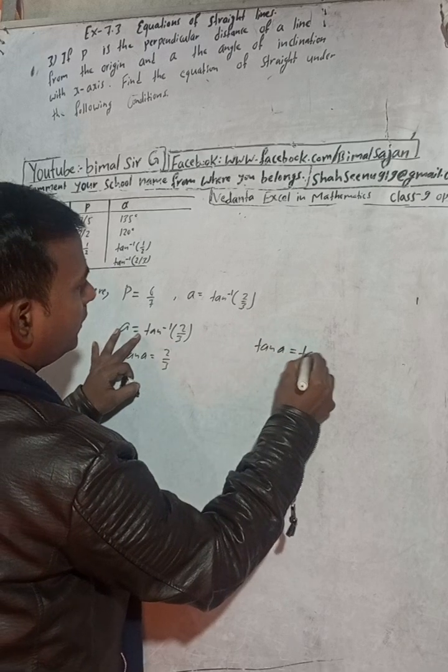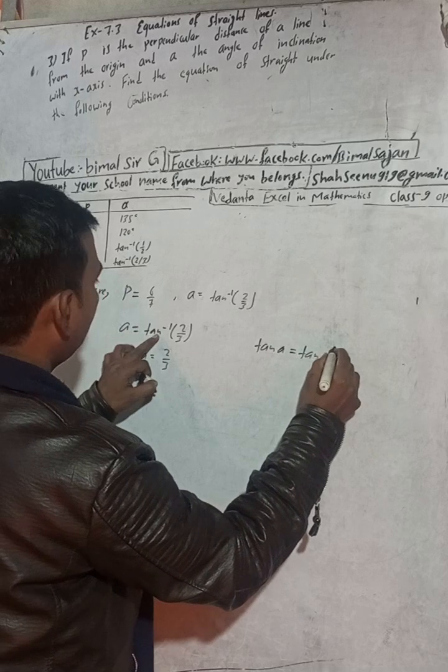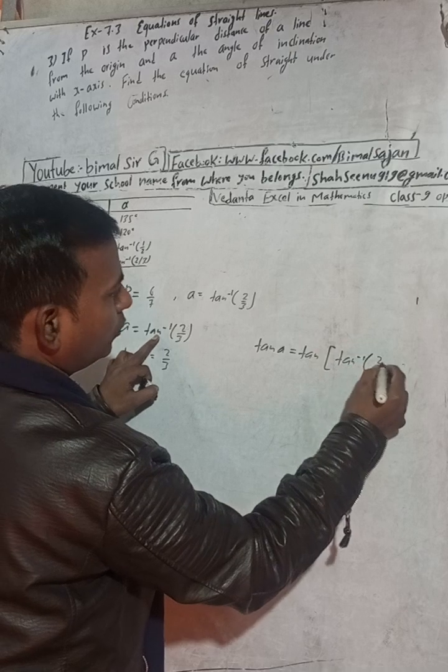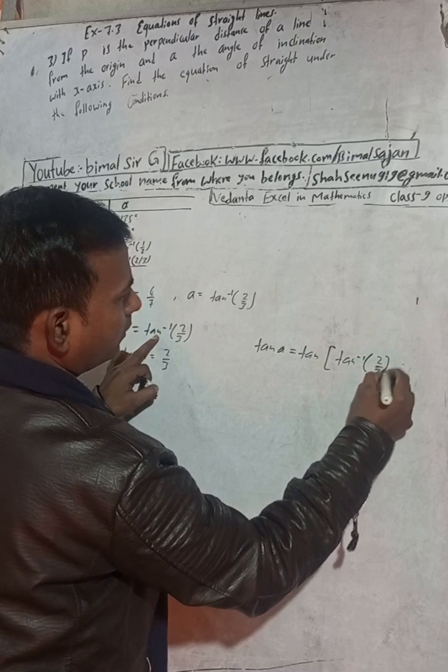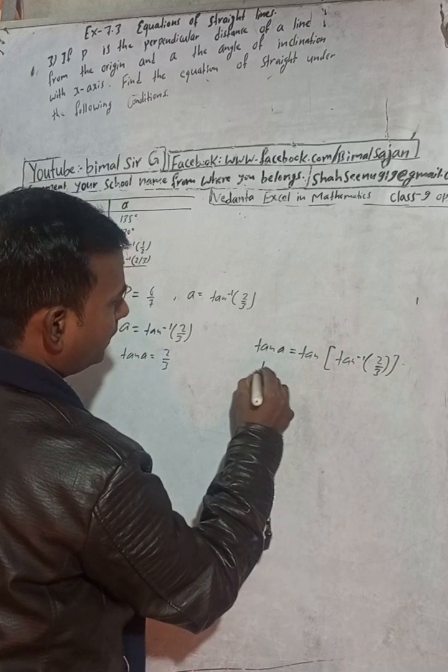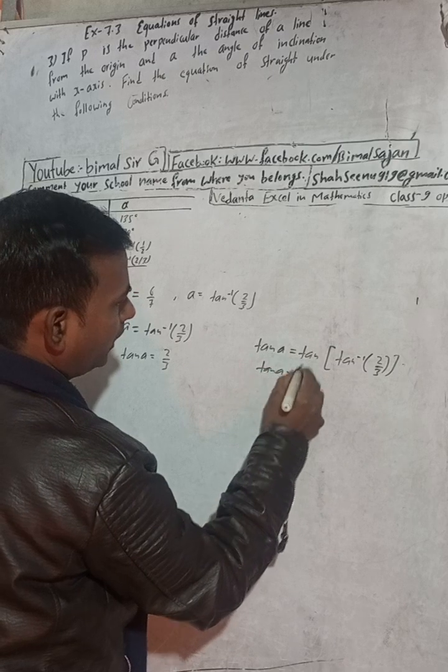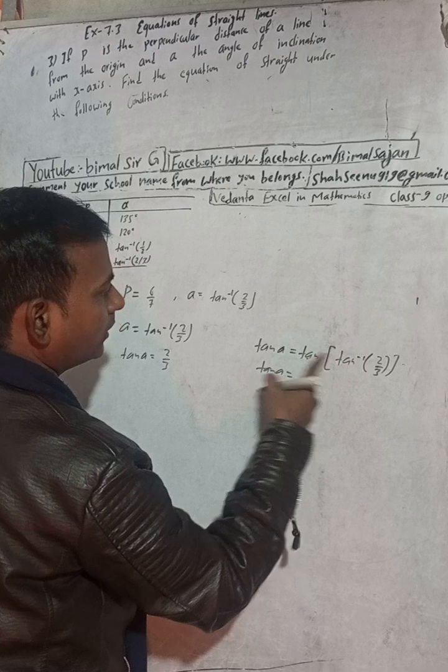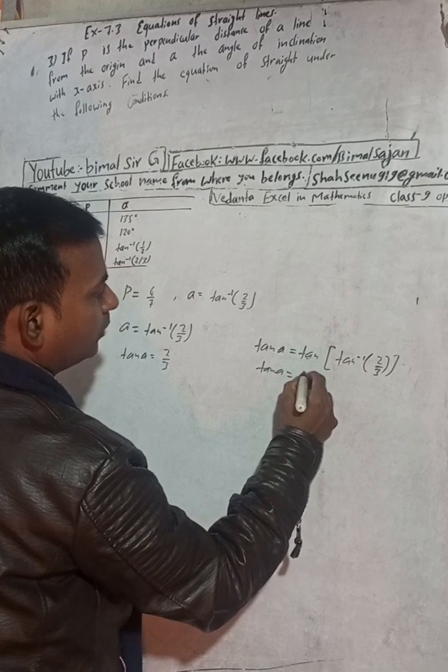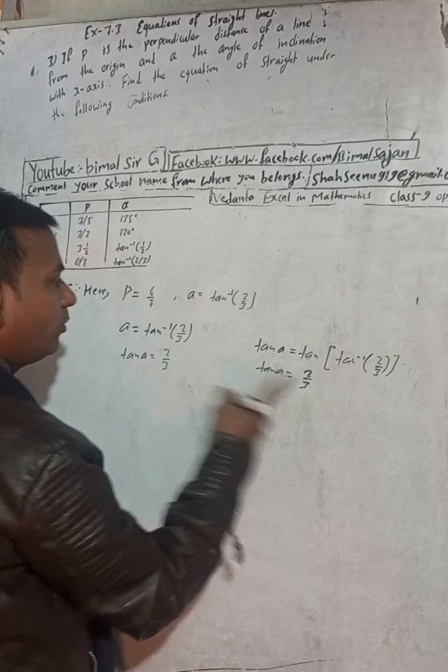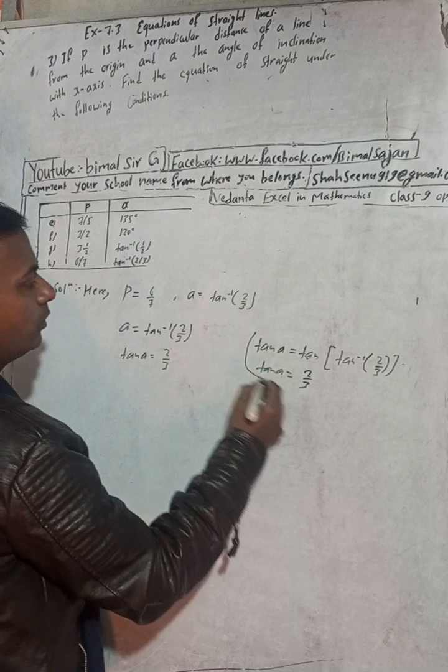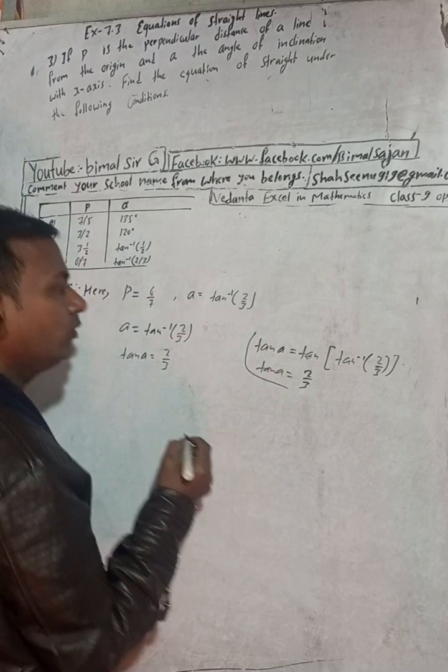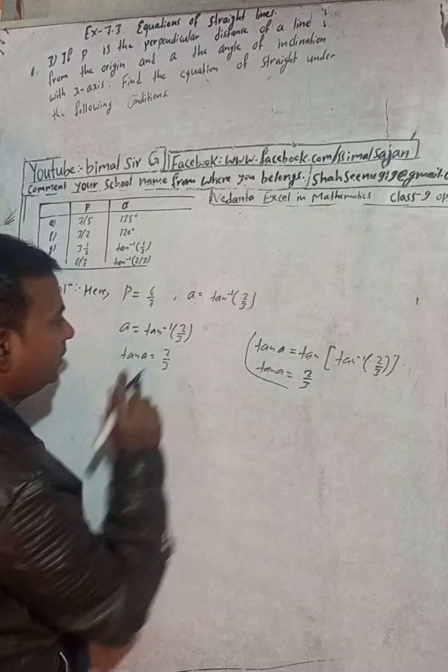So tan on both sides means tan times tan inverse alpha equals tan of this also. Now this will be, both side tan, so this is tan of tan inverse 2/3. What happens is tan alpha, and tan and tan inverse will be cancelled. This is 2/3. In both methods we got the same 2/3, so either you do this type or that type, it's okay.